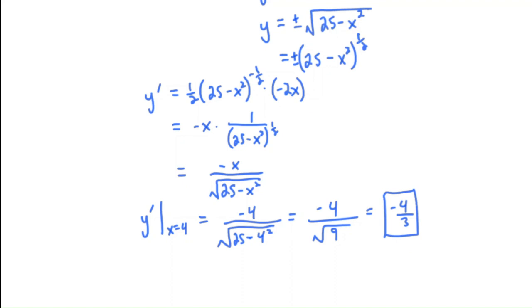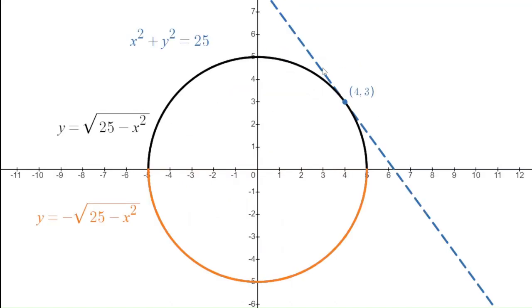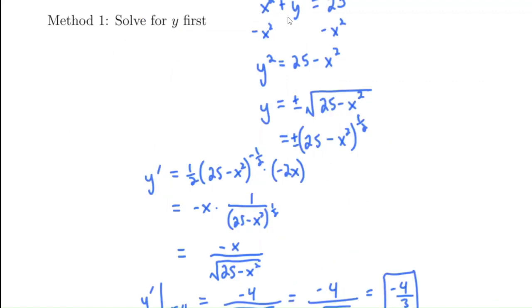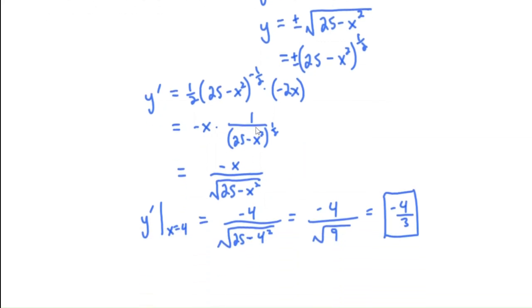That is the slope of the tangent line: -4/3. It's a negative slope, a little more than -1. So with method one, we took x² + y² = 25, solved it for y, used the top half since (4, 3) is there, applied the chain rule, simplified, then plugged in x = 4 to get -4/3.